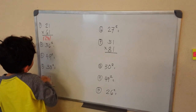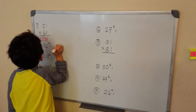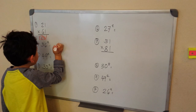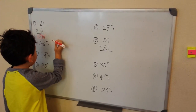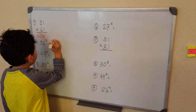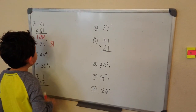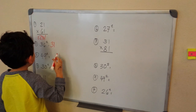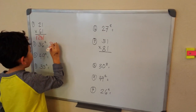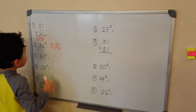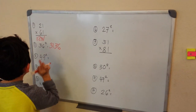We have 56 squared. 25 times 6 is 31. Then 6 squared makes 36. 3,136.